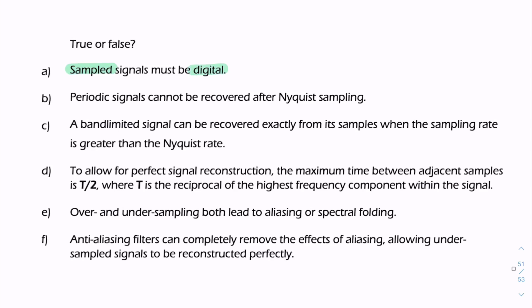If something is sampled, that means it's discrete. It doesn't necessarily mean that these values are quantized. They can still be continuous in amplitude, even though they're discrete in time. So the first statement is false. Sampled signals don't have to be digital. They can very much be analog.